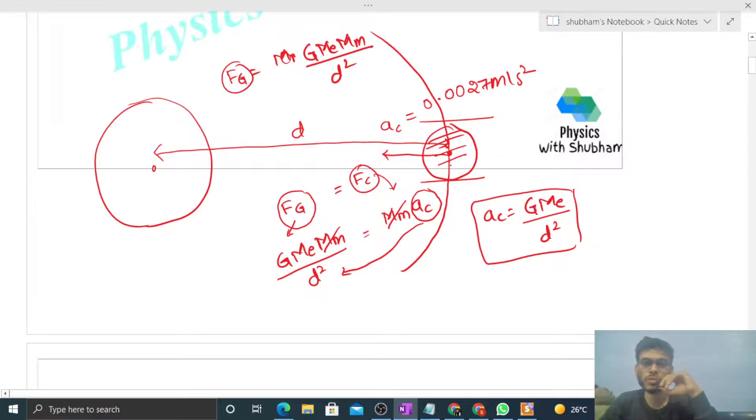So this much force will act. What will be the acceleration at that particular moment for the moon? If you divide Fg by mass of moon, net force divided by mass of the moon will give you the acceleration of the moon at that instant.